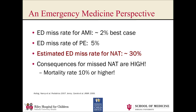And in fact, as a general rule, we've gotten pretty good at it. Our miss rates for acute myocardial infarction nationally are about 2%, 5% or so for PE. What may be surprising, however, to many clinicians is that our miss rates for non-accidental trauma is estimated to be 30% or more.